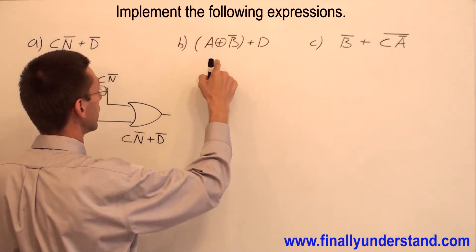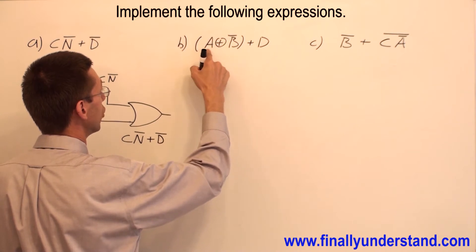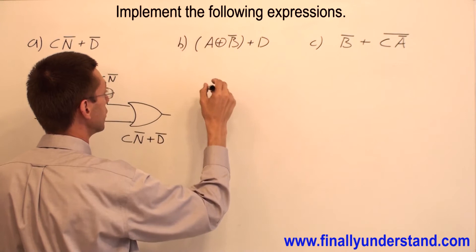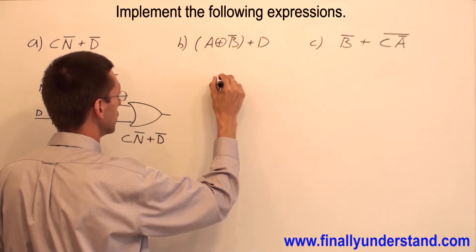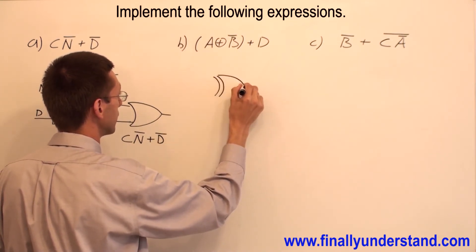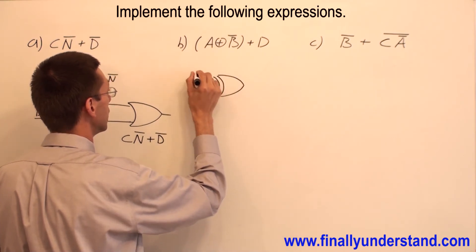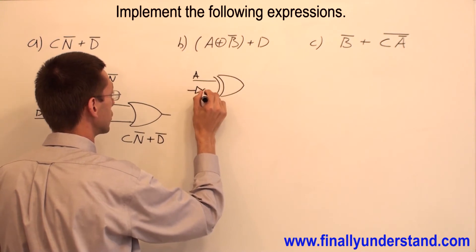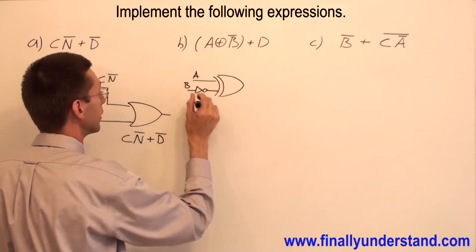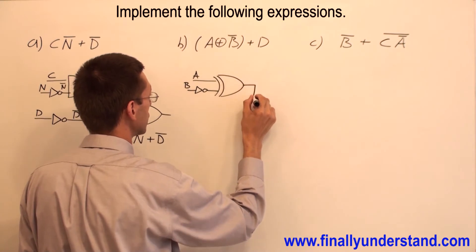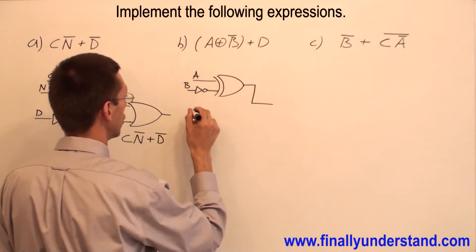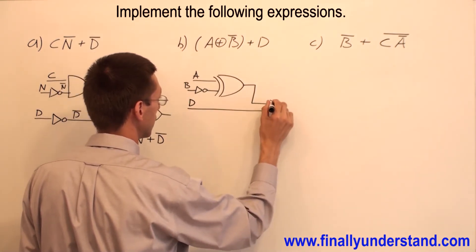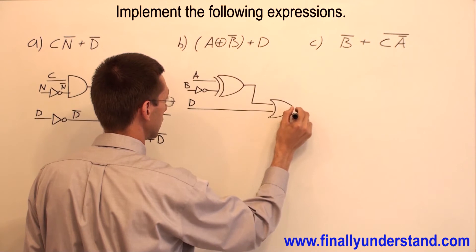Example B. This is exclusive OR but B will be connected to the inverter. So I'm going to draw exclusive OR. A and B goes with the inverter and the output of exclusive OR is ORed with D.